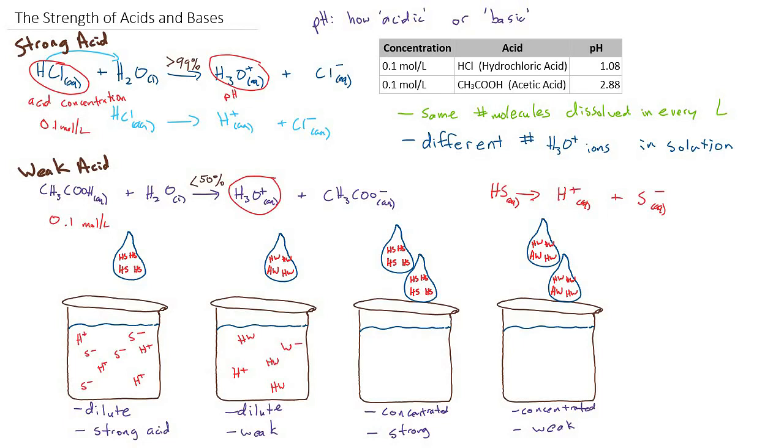So for the strong acid, we expect all of them, or basically all of them, will ionize. So now we're going to have eight H+, and eight S-, in our solution, because every single molecule is ionized, and we had eight molecules to start with.